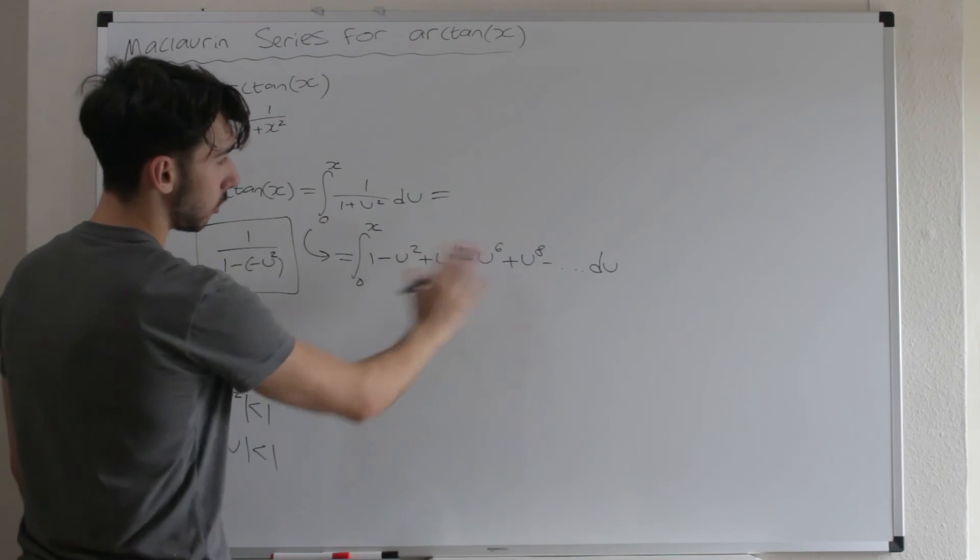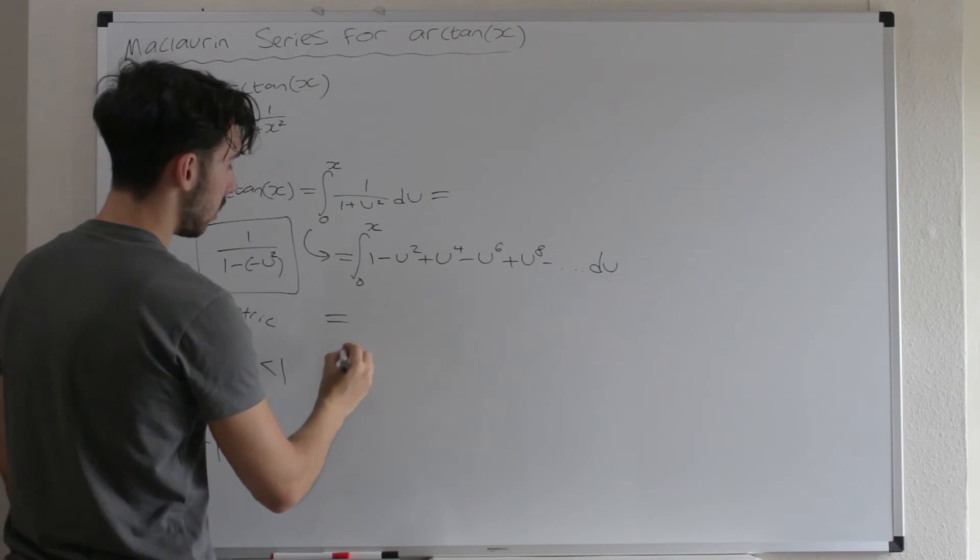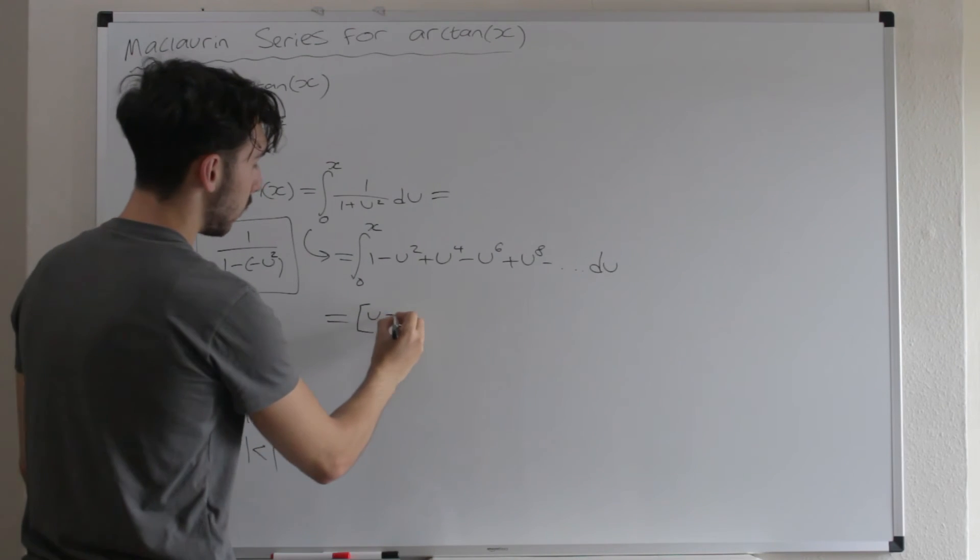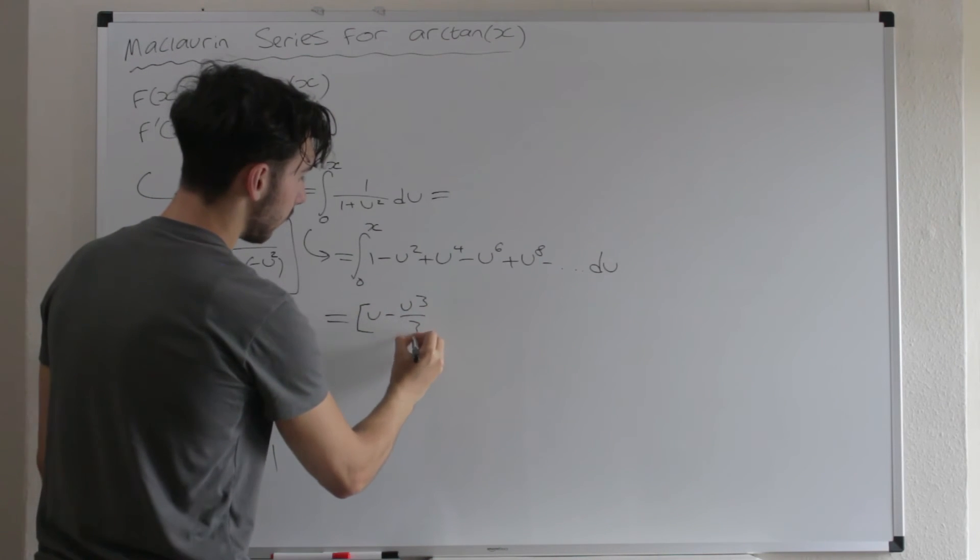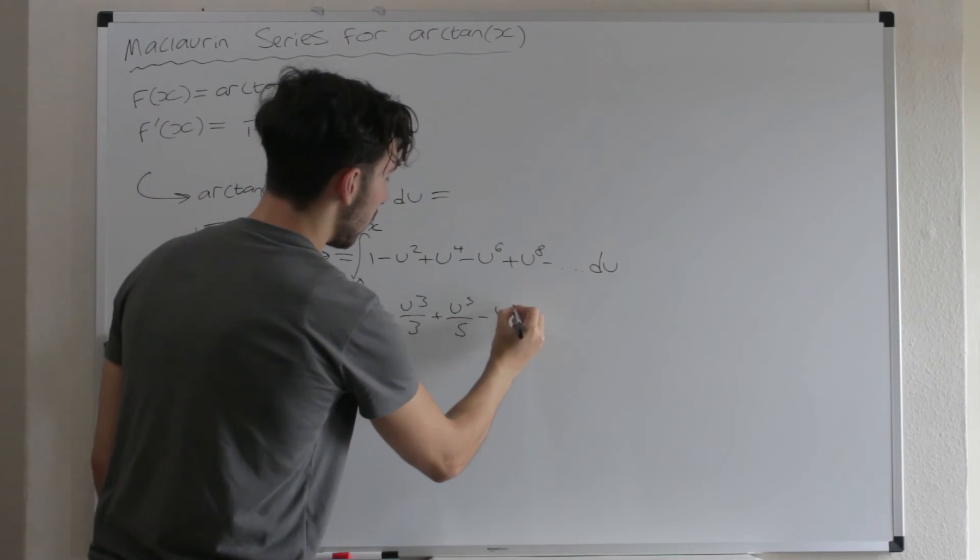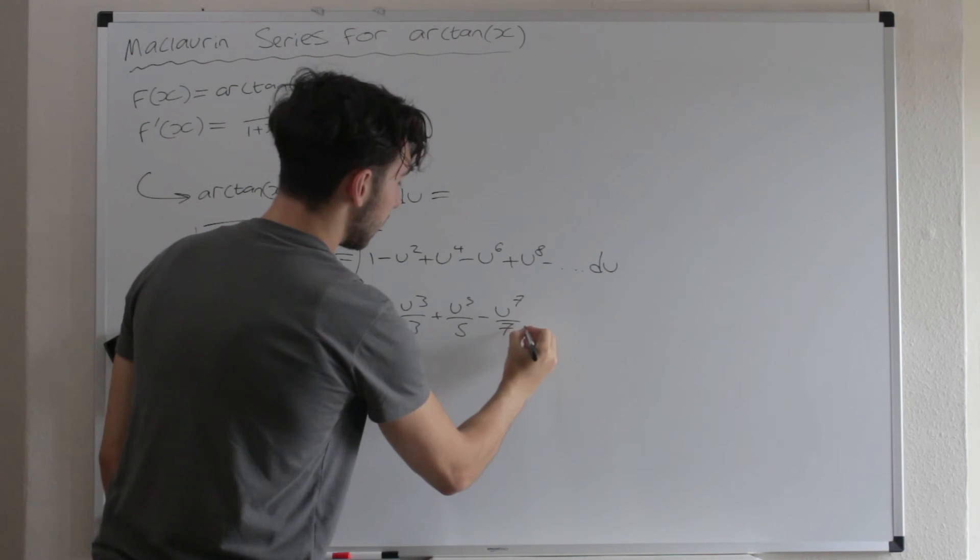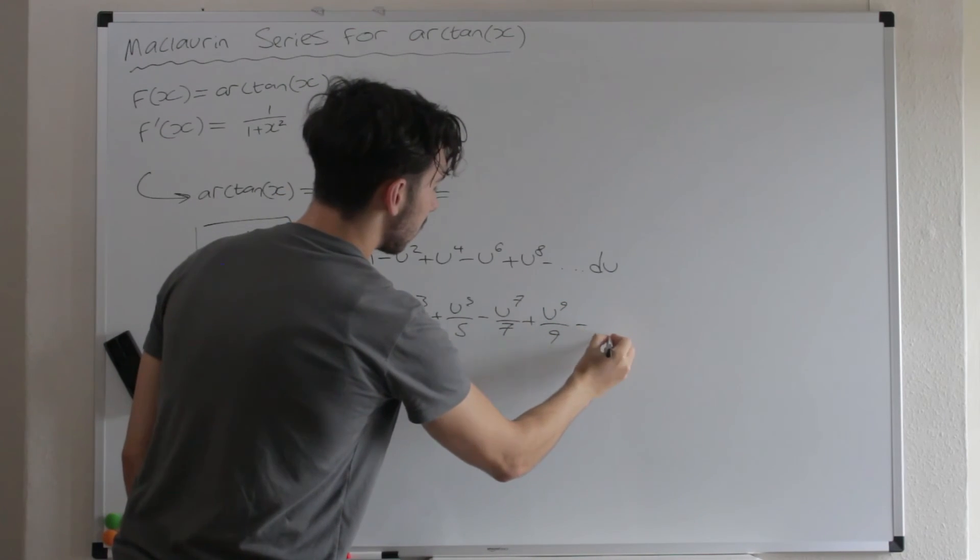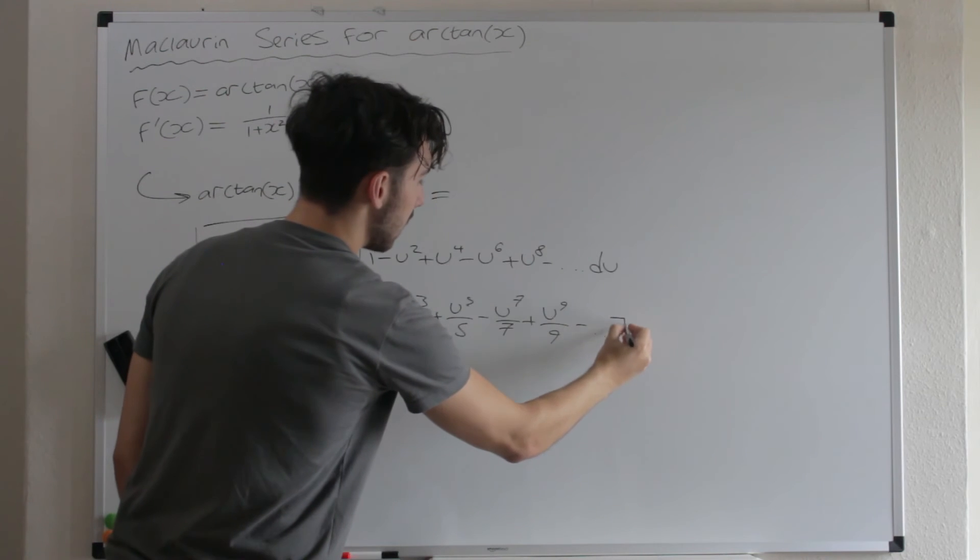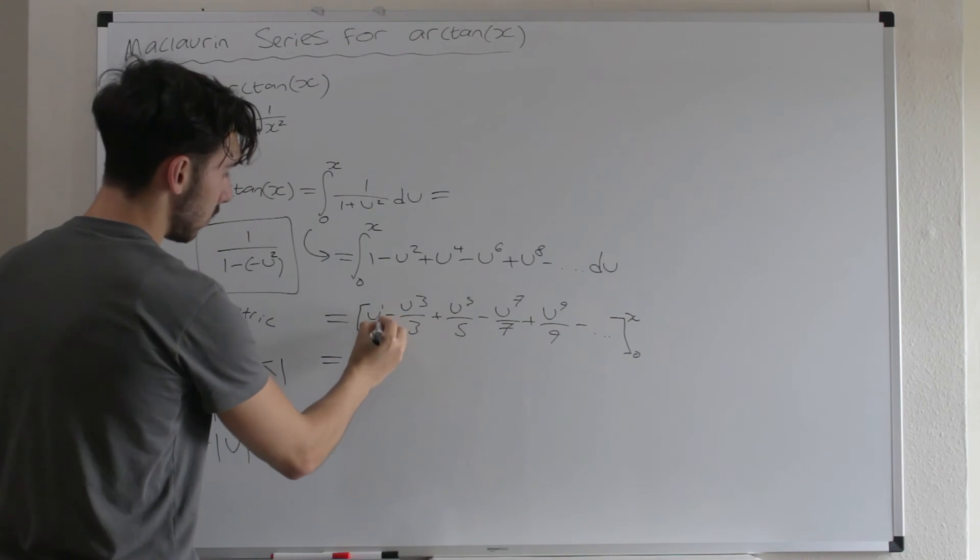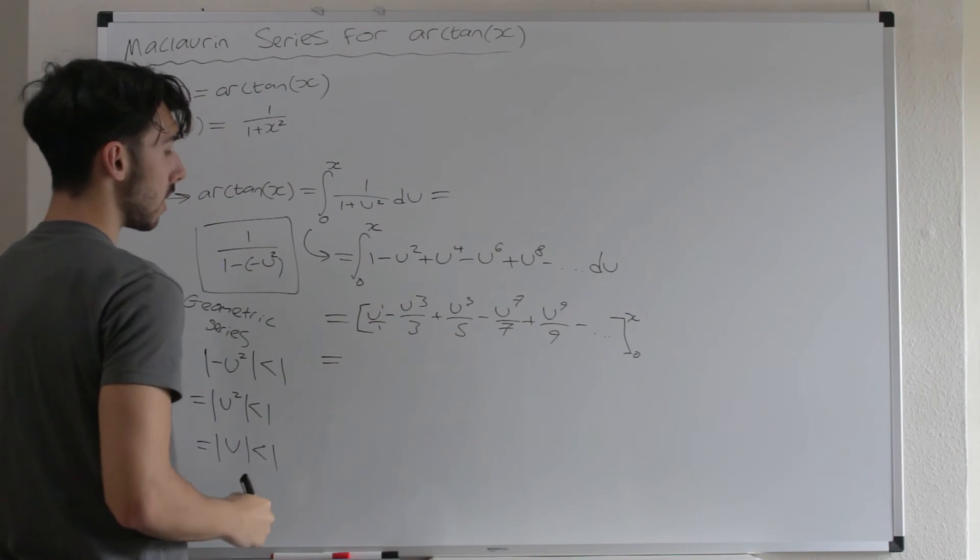All we do now is we integrate this. So this is equal to the integral. Integral of 1 with respect to U is U. We end up with U minus U cubed over 3 plus U to the 5 over 5 minus U to the 7 over 7 plus U to the 9 over 9 minus dot dot dot forever. And the limits are 0 and x. So it's the odd numbers. Okay, odd part because this is kind of like U to the 1 over 1, isn't it? Lovely.